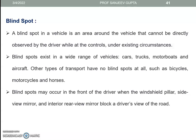Blind spot: a blind spot in a vehicle is an area around the vehicle that cannot be directly observed by the driver while at the controls under normal circumstances. Blind spots exist in a wide range of vehicles — cars, trucks, motorboats, and aircraft. Other types of transport have no blind spot at all, such as bicycles, motorcycles, and horses. Blind spots may occur at the front of the driver when the windshield pillar, side view mirror, and interior rear view mirror block the driver's view of the road.